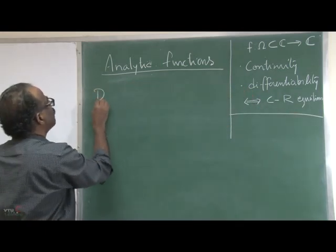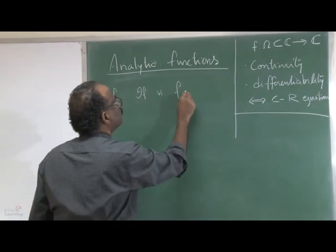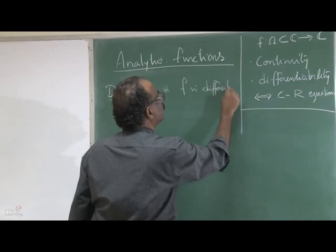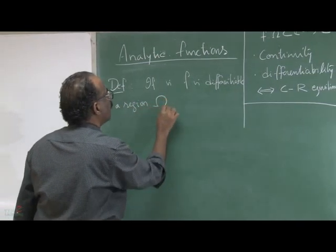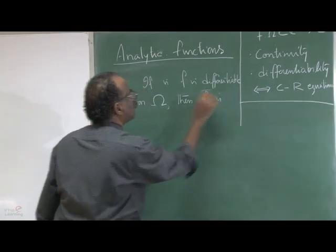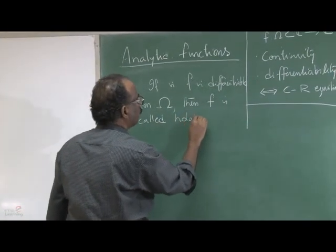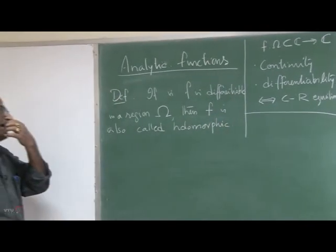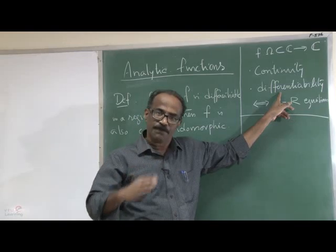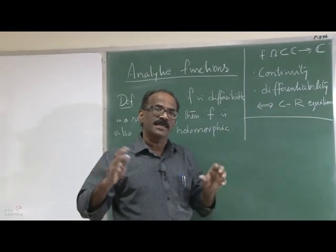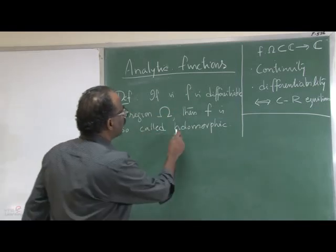We are introducing terminology. If f is differentiable in a region omega, then f is also called holomorphic. It is another word — holomorphic. So because when you read some books you will see the notion of holomorphic. Differentiability is a local concept — it is defined at a point. And if the function is differentiable at all points then it is called differentiable in that region. This is another name: holomorphic.